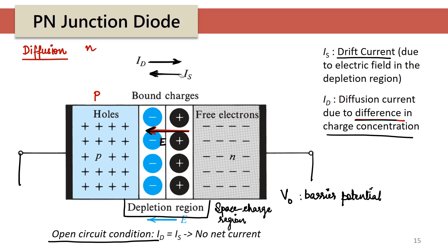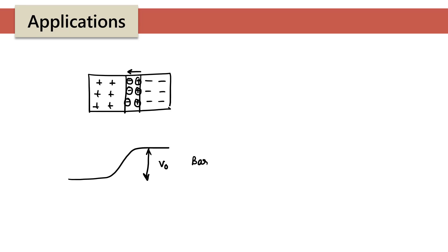The barrier potential is constant at a given temperature and depends on the material — silicon will have one value and germanium another. The P-type and N-type are both made of the same semiconductor, just doped with different materials. This is called a junction diode because the hero of the whole story is this junction between the two differently doped materials.